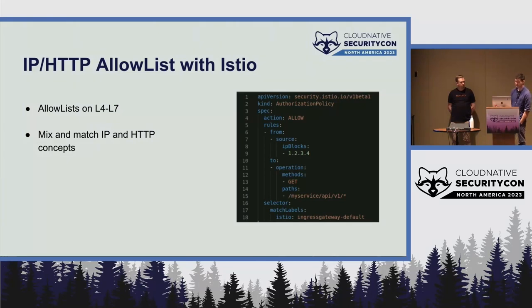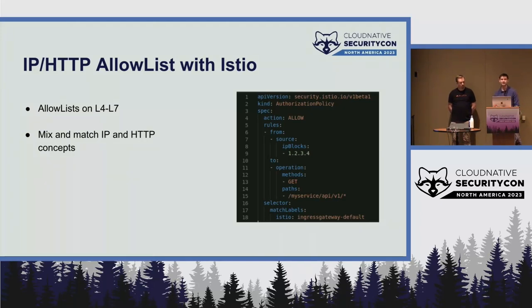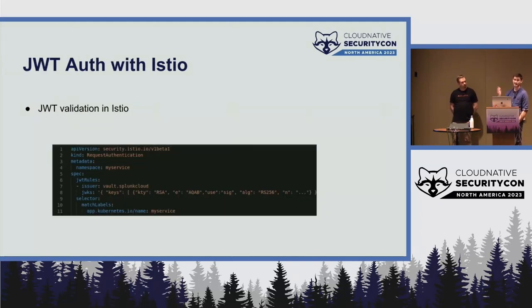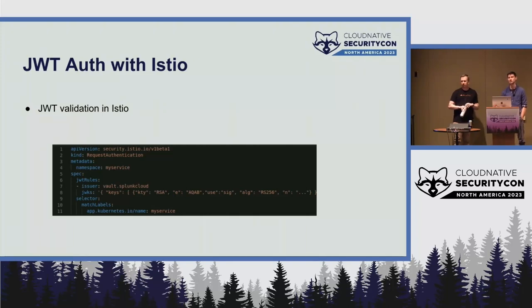We also use Istio network policies and allow lists. At the Istio layer you can mix and match layer-4 and layer-7 concepts — for example, defining source IPs that can access specific paths and hostnames for a service. The higher in the stack you go, the more concepts you can use to define network policies. Some tenants also use request authentication CRDs to define JWT auth and validate that any request coming into their workload has a correct token in the headers.